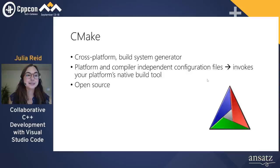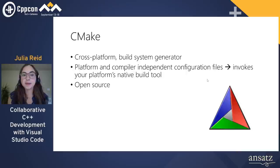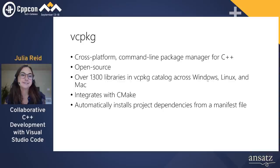The first recommendation is to set your project up for cross-platform success from the start — it'll be easier for someone to reproduce your issue and build your project on their machine. The first tool I'll talk about is CMake, a cross-platform build system generator. It has platform and compiler-independent configuration files and invokes your platform's native build tool under the hood. You could have the same configuration file across Linux, Mac, and Windows, and CMake will invoke Ninja or Makefile accordingly. CMake is open source with a great community, making it a popular choice for open source projects.